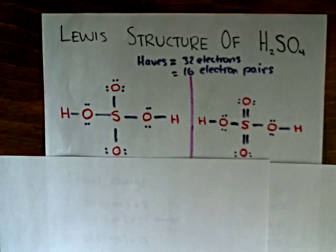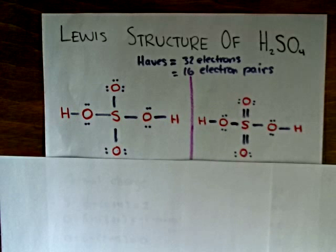This also has 32 electrons or 16 electron pairs distributed around. So the question we have to ask is, which one is the valid structure, the correct structure of sulfuric acid?